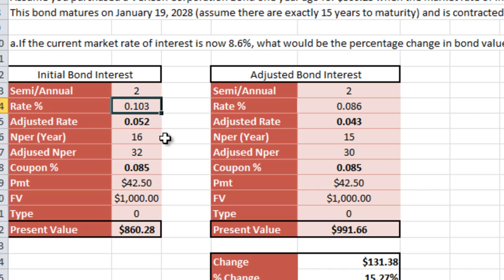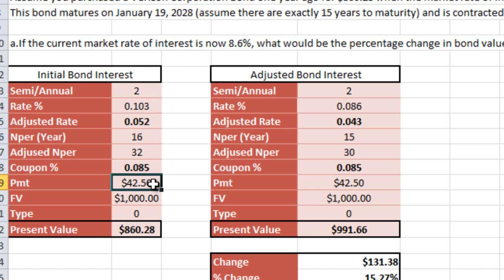The NPER is really the trick of the whole problem — it's actually going to be set to 16, not 15, because technically you bought it one year ago today. That's the hidden trick of problem 2. The coupon is set to 0.085, giving us a payment of $42.50.